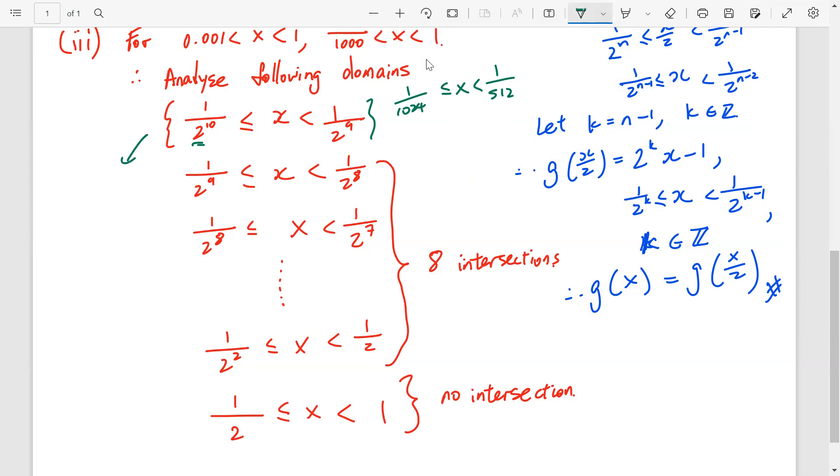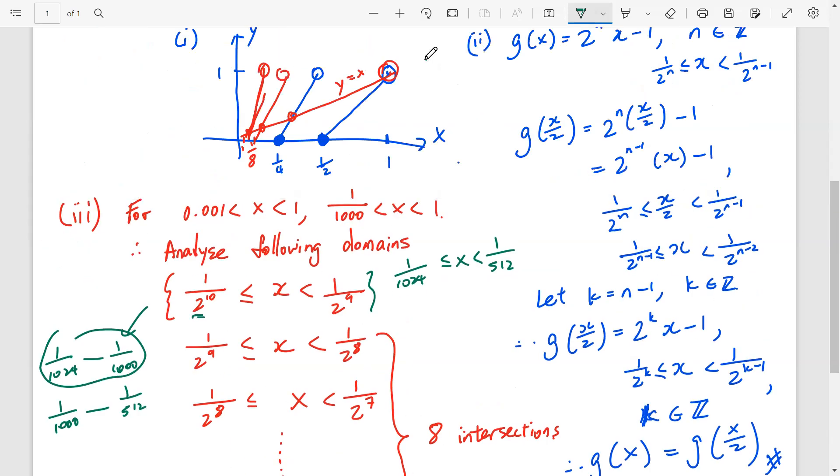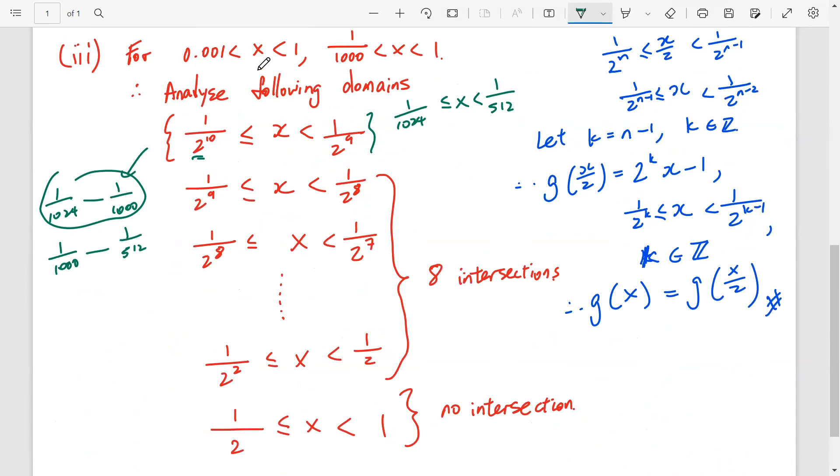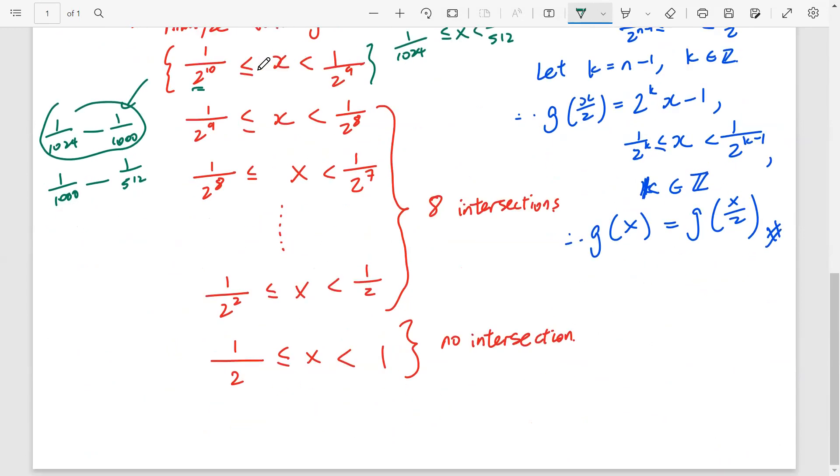whether is it, between 1 over 1024, to 1 over 1,000, or 1 over 1,000, to, 1 over 512. Because, if it's here, it's not within a graph. It's not within this domain. Not within this domain. But, if it's here, it is within a domain. So, we want to check. So, this is where n equals to 10.